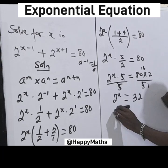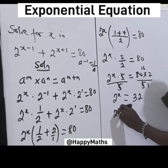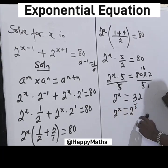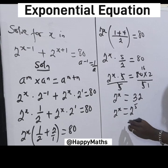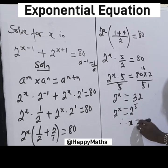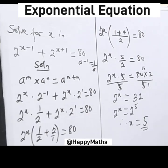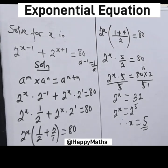Now let's take both sides to the same base. This is 2 raised by s equals 2 raised by 5. Since the bases are the same, we equate the powers. Therefore, s is equal to 5. That is the final answer. Please hit the subscribe button and follow us for more. Bye.